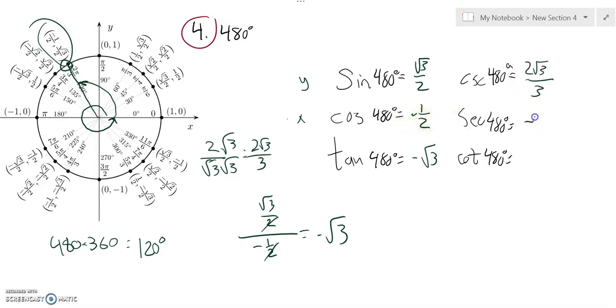If I flip negative 1 half, it becomes negative 2. If I take the reciprocal of negative root 3, it's 1 over negative root 3, which is, multiply by that, negative root 3 over 3.